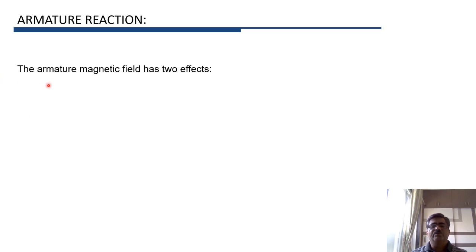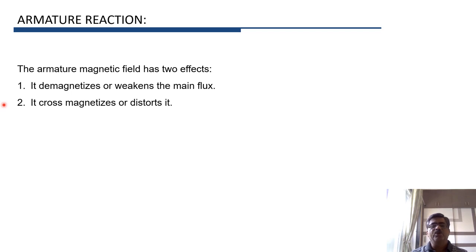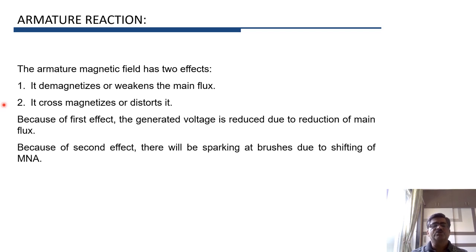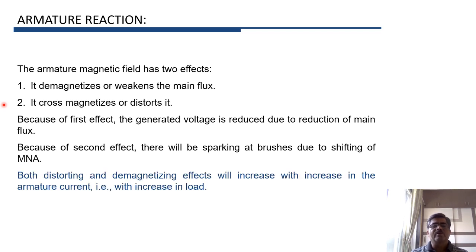In our previous videos we studied the effects of armature reaction. Because of armature reaction there is demagnetization or weakening of the main flux, and there is also cross-magnetization or distortion of the main flux. Because of the first effect the generated voltage is reduced, and because of the second effect commutation will not be proper — there will be sparking at brushes — mainly because of shifting of the magnetic neutral axis. Both these effects increase with increase in armature current, that is with increase in load.